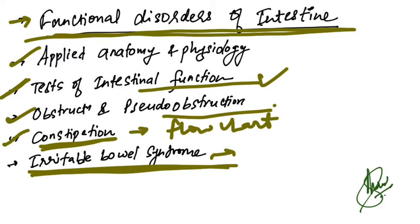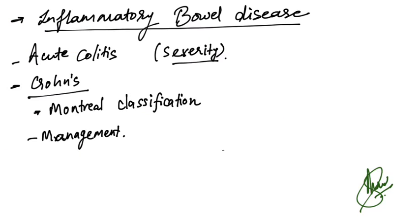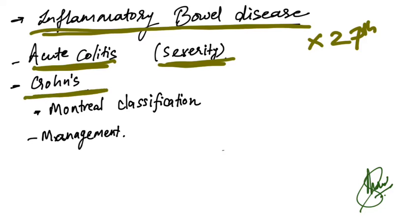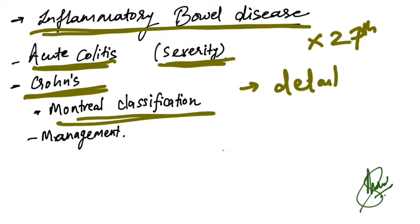Inflammatory Bowel Disease is a new chapter added - it was not in the 27th edition. They have discussed acute colitis, severity of the disease, and Crohn's disease in very detail. Montreal classification has been added along with management.